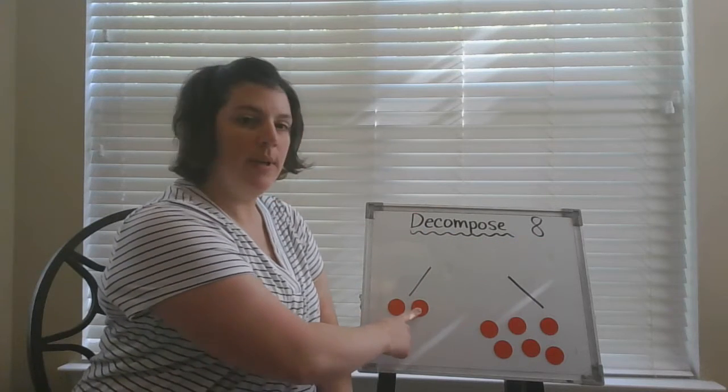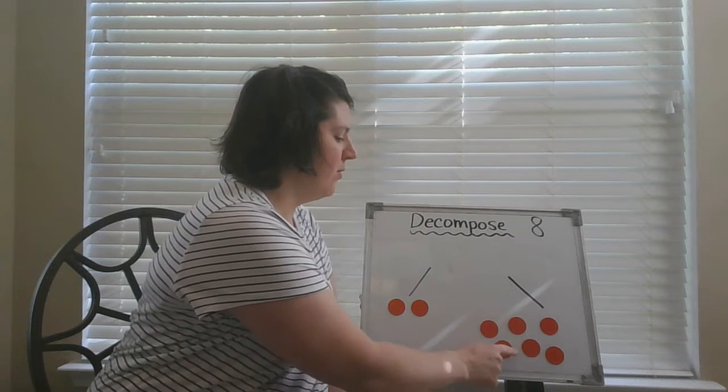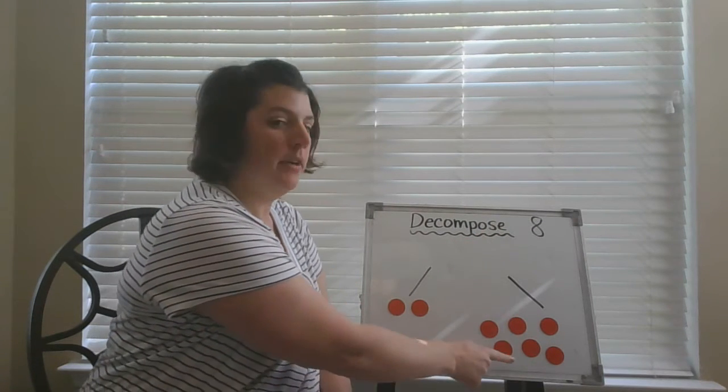I have two here, and on this side, one, two, three, four, five, six. Eight is a group of two and a group of six.